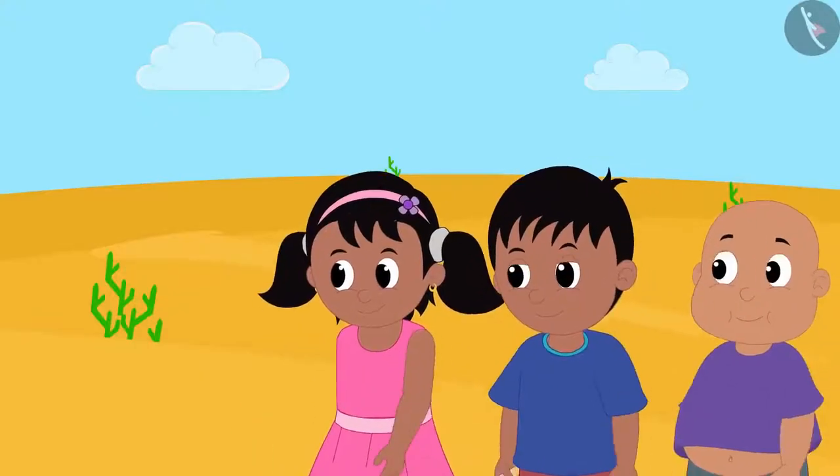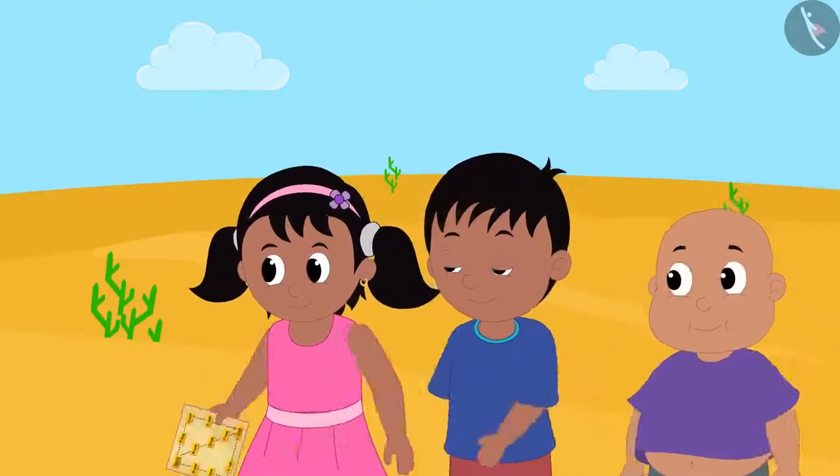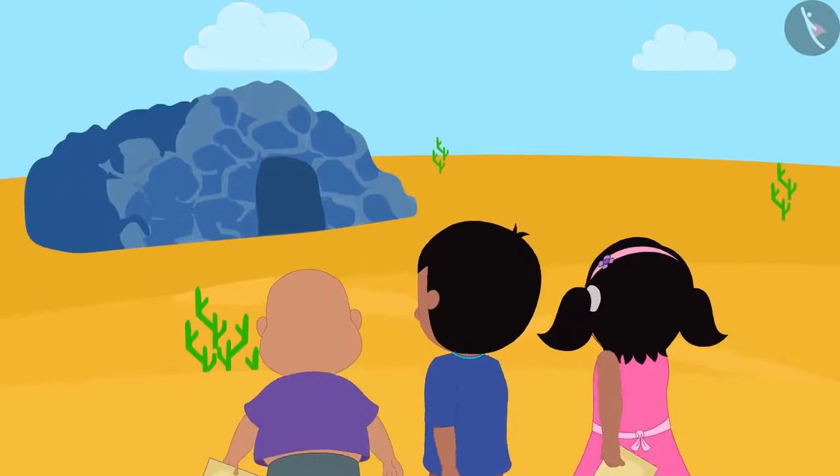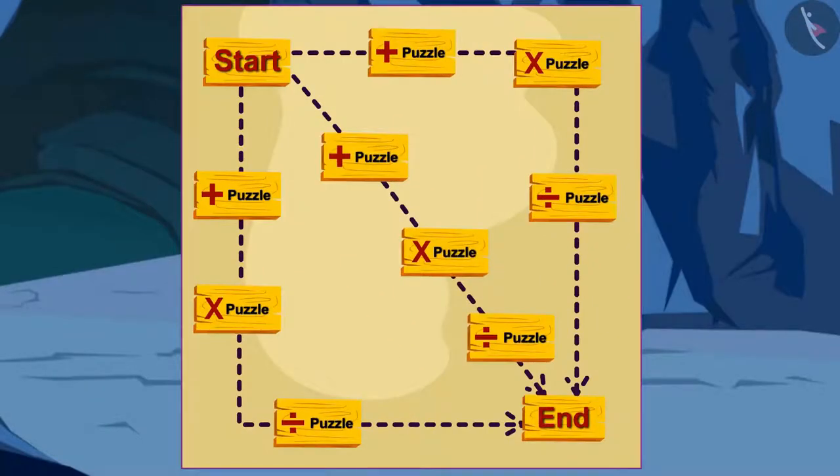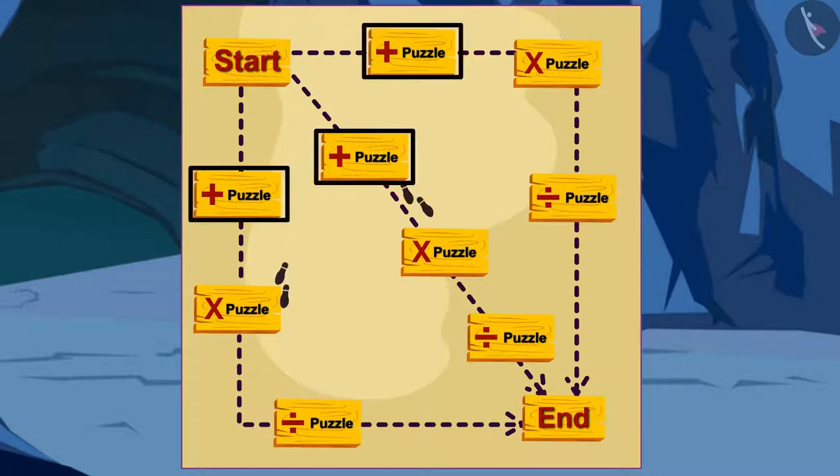Raju, Bablu and Pinky are out in search of treasure. All three have this kind of a map and this message. You will all start from zero. You will have to do the math according to the symbols you see on the way.